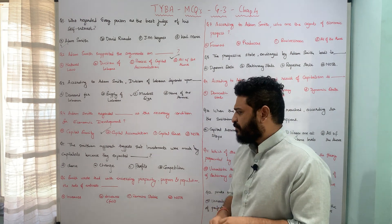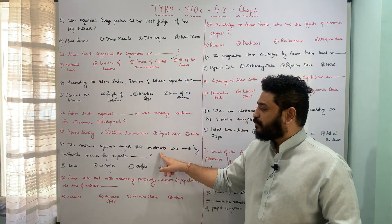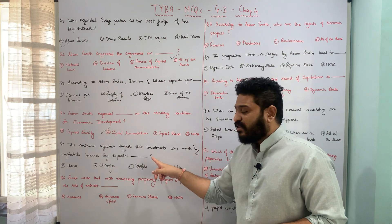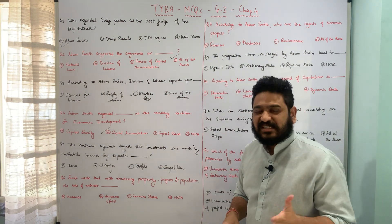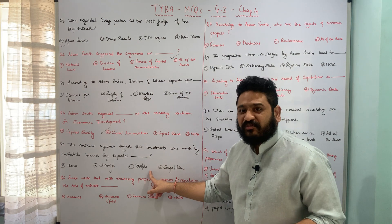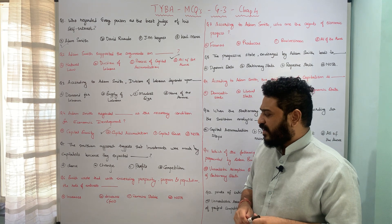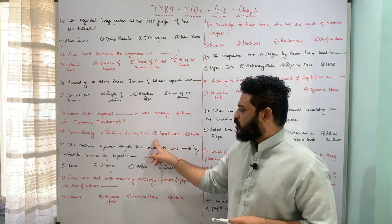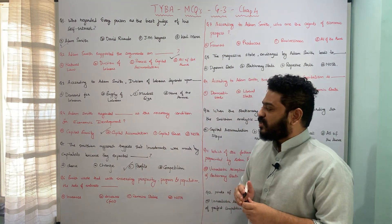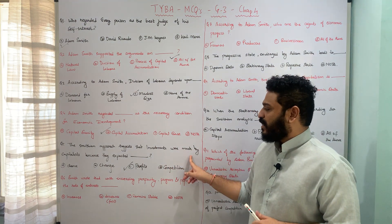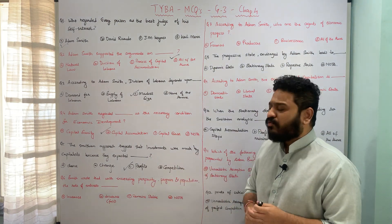The Smithian approach suggests that investments were made by capitalists because they expected what — A chance, B change, C profits, or D competition? We need to identify the reason capitalists engaged in investment, and it is nothing but profits. The Smithian approach suggests that investments were made by capitalists because they expected profits out of those investments.